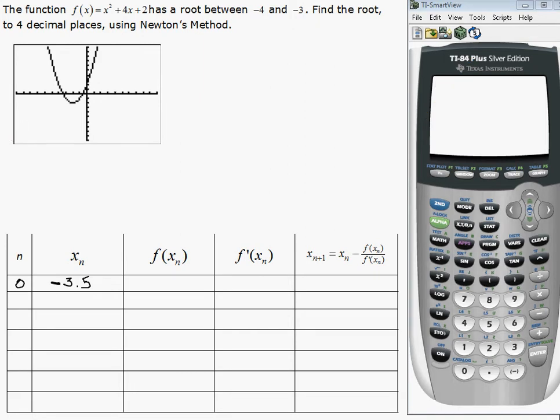Now we're going to graph the function and use our calculator to get the answer. So it's going to be x squared plus 4x plus 2. So if we graph that, we see we get this shape here.